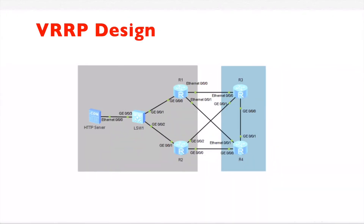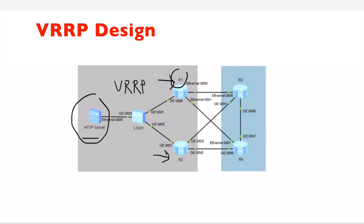In this lab, we have an HTTP server connected to two routers, R1 and R2. R1 and R2 are the gateway routers for the HTTP server. There is VRRP, Virtual Router Redundancy Protocol, configured between Router1 and Router2 to provide redundant gateways for the HTTP server. R1 is configured as the master gateway and R2 as the backup gateway. The VRRP heartbeat is passing through the switch.